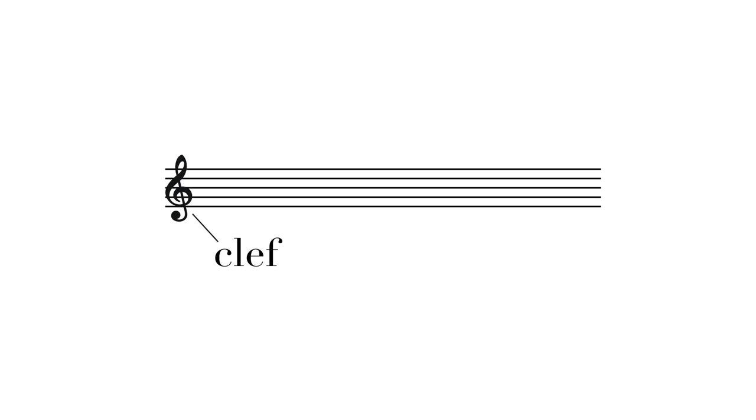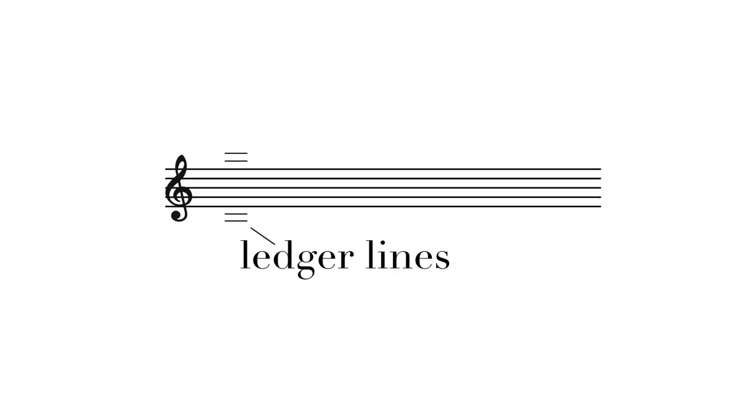A clef is a symbol that indicates how to read a particular staff. The lines and spaces each represent a note, and the clef will tell us which one it is. The lines and spaces can continue above and below the staff — we call these ledger lines.